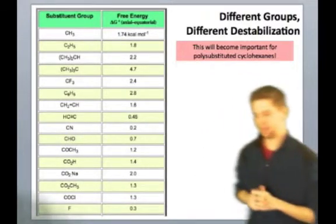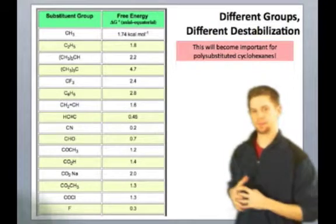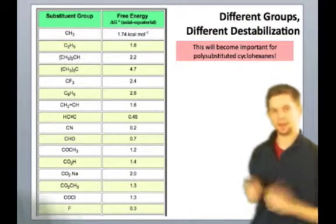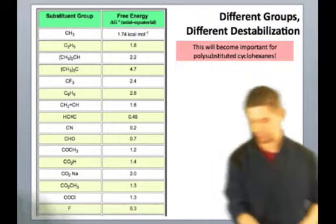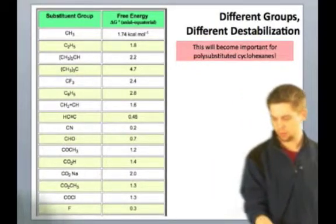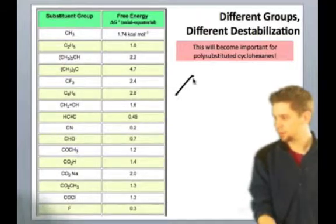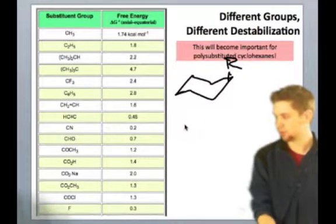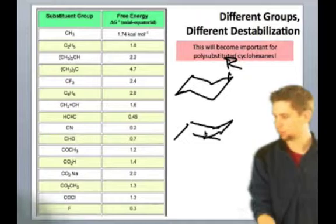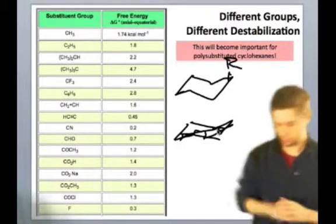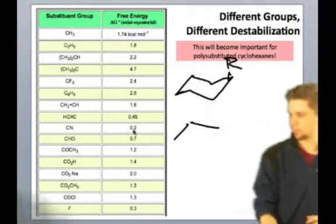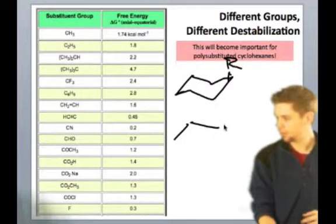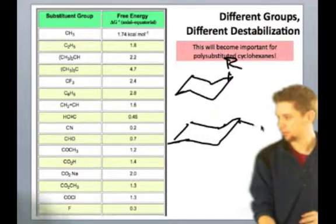Here's a table that illustrates the interesting idea that different substituents have different destabilizations of their axial conformer relative to their equatorial. So what you're looking at here, the numbers may be a little bit difficult to see, but what you're looking at are numbers that will illustrate the difference in energy between the axial and equatorial conformer.